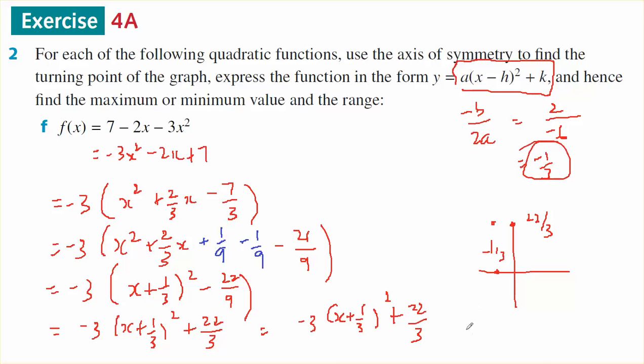And it is an upside down parabola that looks like this. Therefore the maximum value of the range is 22/3 because the range goes from negative infinity to 22/3 inclusive. So the maximum value of the range is 22/3.